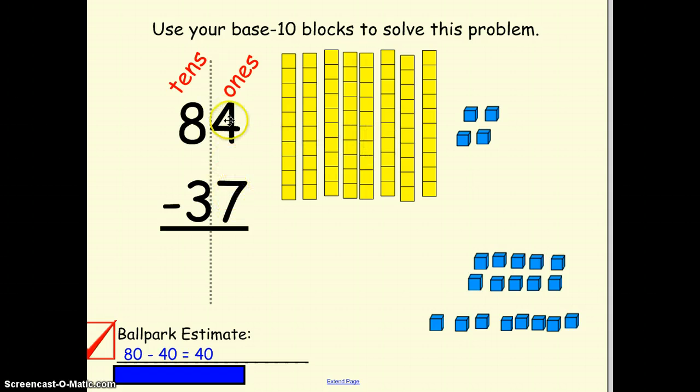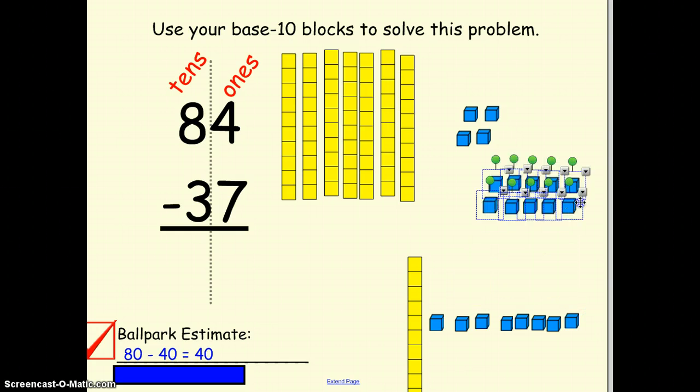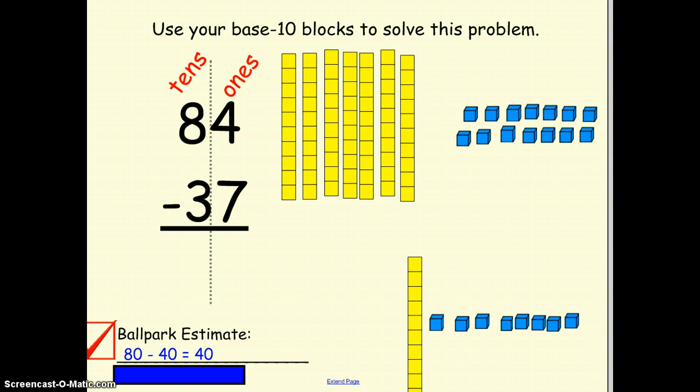Now you'll notice when I want to start taking things away, I have 7 ones I want to take away from 4 ones, and I'm showing that here, 84 in base-10 blocks. I can't take away 7 from just 4 blocks so I actually have to trade out. So let me get rid of this block here and because that's worth 10, I'm going to put in 10 cubes here. And to show that on paper, because I took away one of my sticks, one of my tens, I have 7 tens left, 7 sticks. But check it out, I've added 10 cubes, 10 ones.